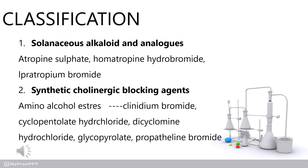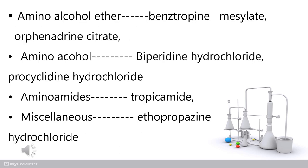Classification is mainly two types: solanaceous alkaloids and synthetic alkaloids. Synthetic alkaloids are also subdivided. Examples of solanaceous alkaloids include atropine sulfate, homatropine hydrobromide, and ipratropium bromide. Synthetic cholinergic blocking agents include amino alcohol esters — examples: planidium bromide, cyclopentolate hydrochloride, dicyclomine hydrochloride, glycopyrrolate, propantheline bromide. Amino alcohol example: benztropine mesylate or phenylcyclidine. Bipyridine hydrochloride, procyclidine hydrochloride. Amino amides example: tropicamide. Miscellaneous example: ethopropazine hydrochloride.